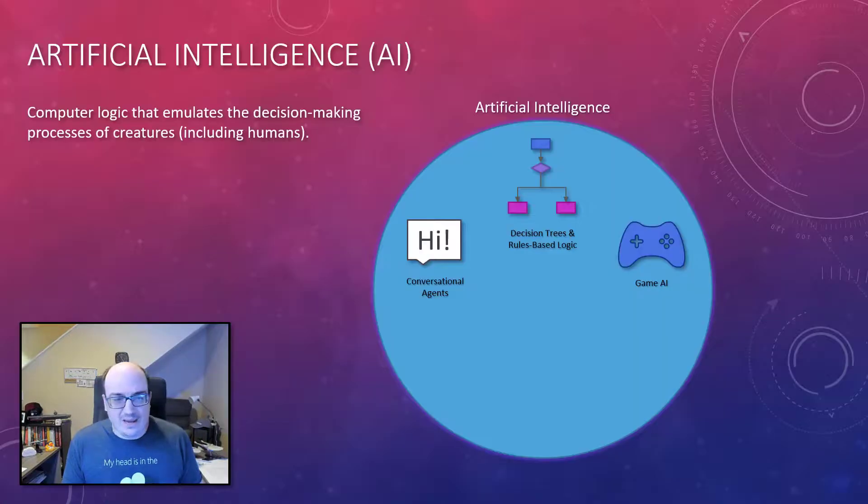So at the highest level, we have artificial intelligence. Artificial intelligence is all about anything that we do that tries to get a computer to emulate the behavior of humans or animals.